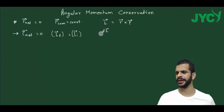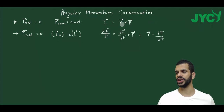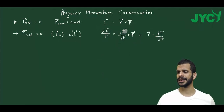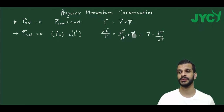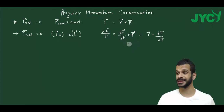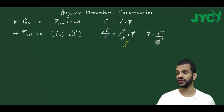We get dL/dt. Using the product rule (UV rule): differentiate r once and keep p, then keep r and differentiate p. Now dr/dt is the velocity vector, and momentum p is m times velocity, so velocity cross velocity gives zero. That term becomes zero.